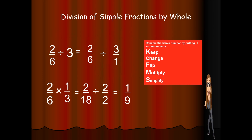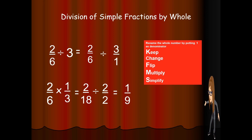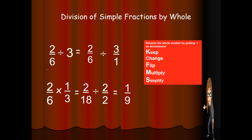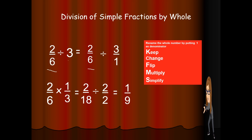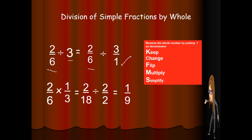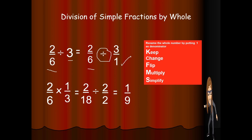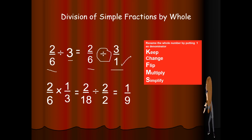Okay class, we have here 2 over 6 divided by 3. The first thing that we need to do is to rename the whole number by putting 1 as denominator. So we keep the first fraction — 2 over 6 — and rename the whole number by putting a denominator of 1. Then we change the sign of division to multiplication.